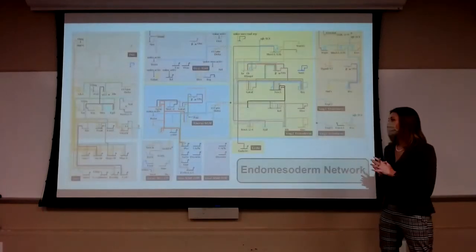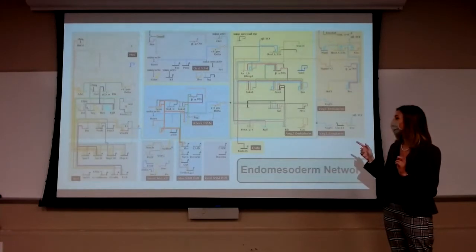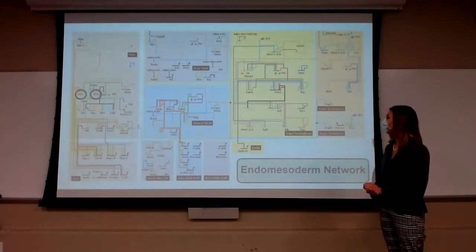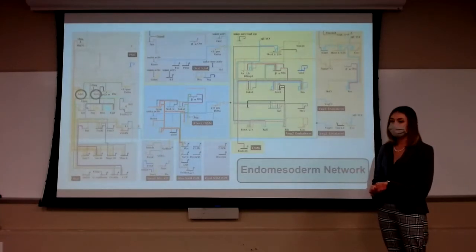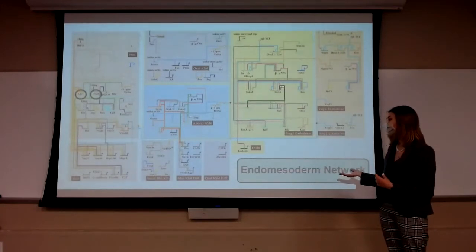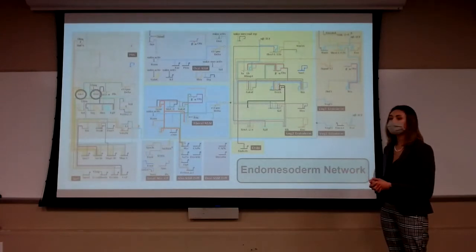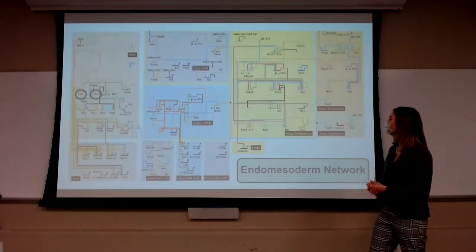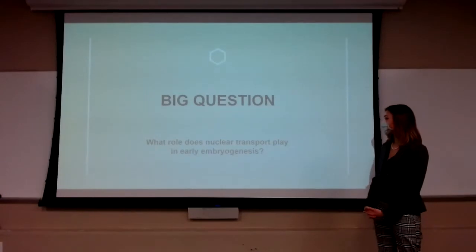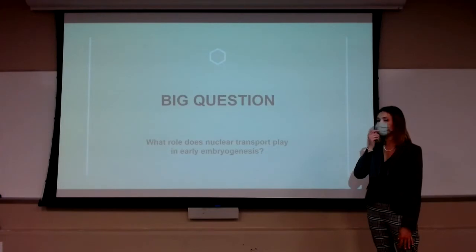We have these gene regulatory networks, which look super overwhelming, but they're basically just a series of transcription factors showing us how those on-and-off switches work to create the development we want to see. This one specifically is the endomesoderm network, showing how the gut and skeleton form. This is another reason we use sea urchin — because it's very well mapped. Our big question is: what role do nuclear transport processes play in early embryogenesis?